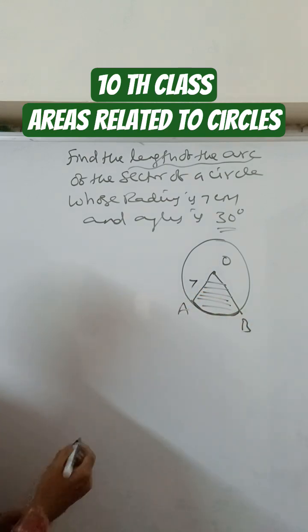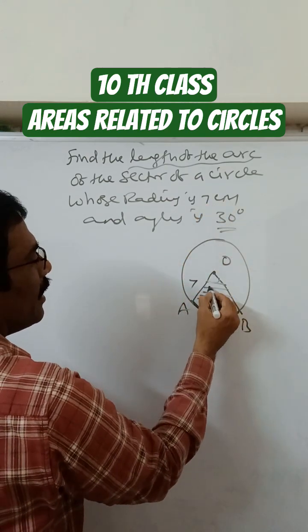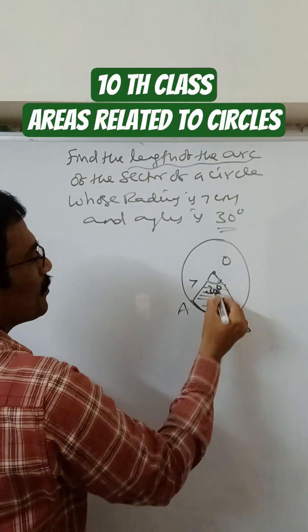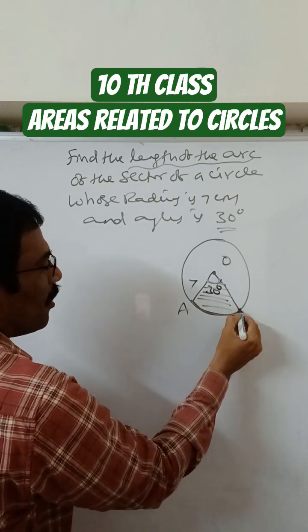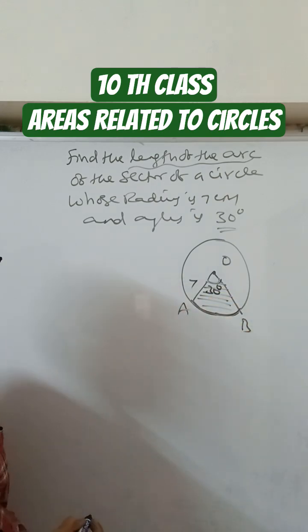Here radius is given 7 centimeters, angle is given 30 degrees. So you have to find the length of this arc.